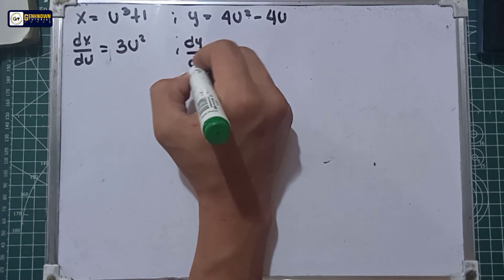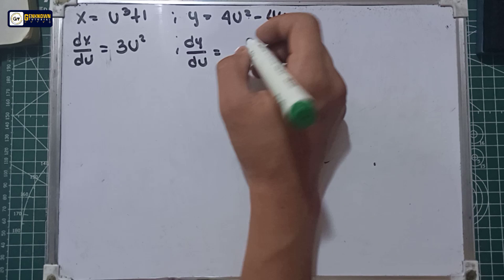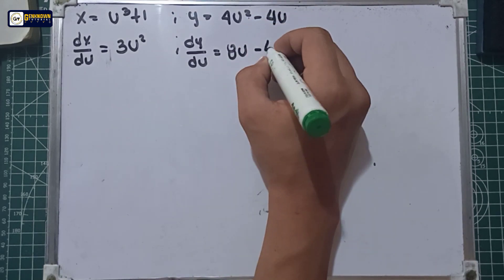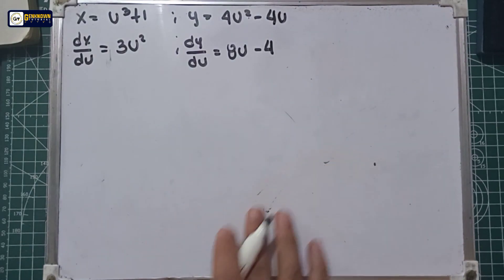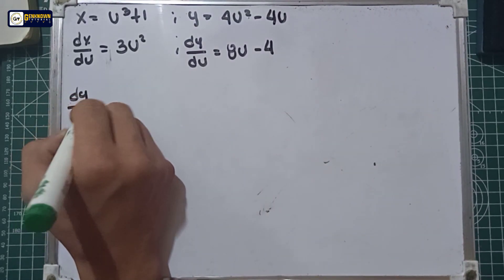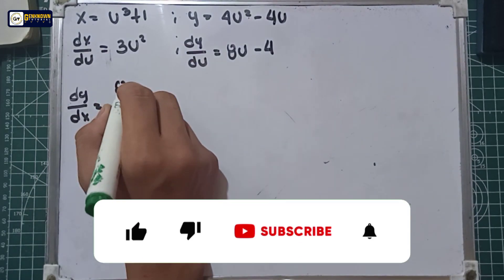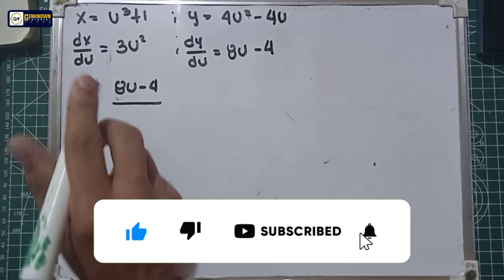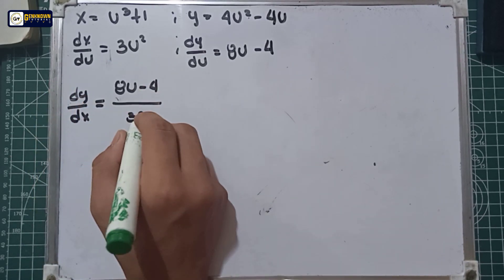So dy over du is equal to 4 multiplied by 2, which is 8u minus 4. The derivative of 4u is 4. So under the first derivative, dy over dx is equal to dy over du, which is 8u minus 4, over dx over du, which gives us 3u squared.